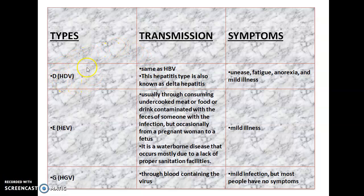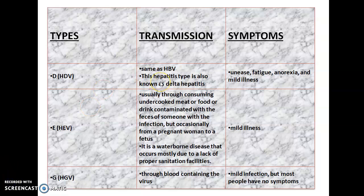Next is Hepatitis D. How it is transmitted: same as Hepatitis B. This type is also known as delta hepatitis. Hepatitis D only occurs in persons who are also infected by the Hepatitis B virus.